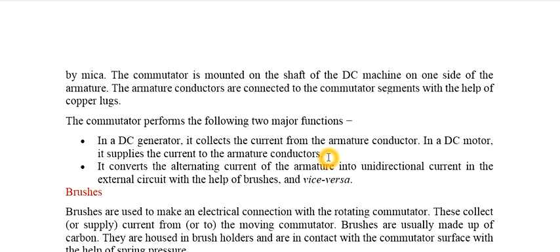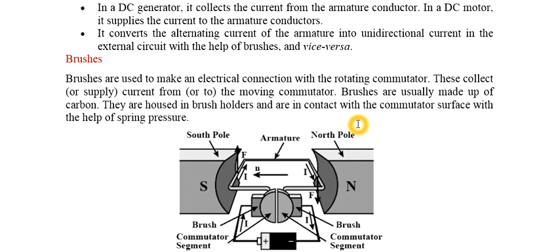The major functions of the commutator are: in a DC generator it collects current from the armature conductors, and in a DC motor it supplies DC current to the armature conductors. It converts the alternating current of the armature into unidirectional current in the external circuit with the help of brushes. Brushes make electrical contact with the rotating commutator so that the output current is unidirectional. Brushes collect current in motor operation and supply current in generator operation, and they are generally made of carbon.